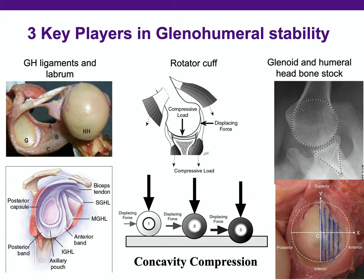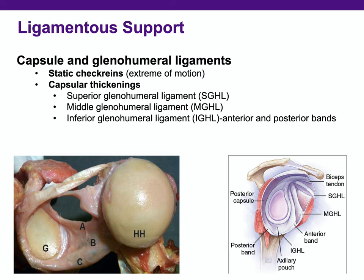There are three key players that determine glenohumeral joint stability, and critical deficiency of one or more of these players can result in glenohumeral instability. The first is the glenohumeral ligaments. The capsule and ligaments provide ligamentous support to the shoulder. They act as static check rings, especially at the extreme of motion, in the form of capsular thickenings.